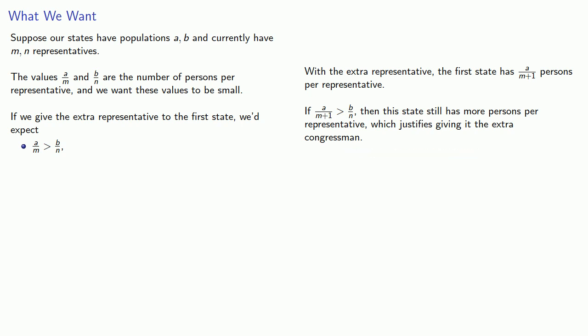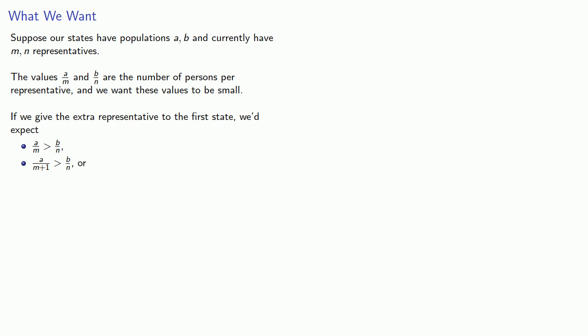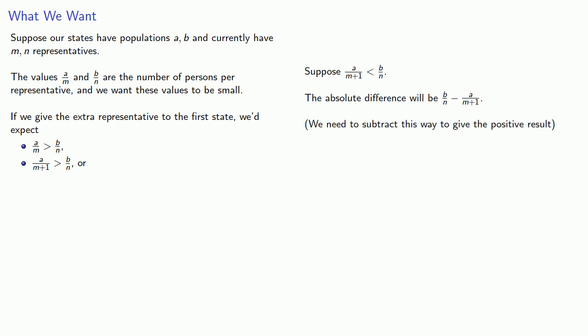So we'd expect that A/(M+1) should be greater than B/N. The problematic case will occur if we end up with a smaller value — the state would then have fewer persons per representative. Since we did give them the extra representative, what that means is that our absolute differences must have dropped. Our absolute difference will be B/N minus A/(M+1). This is supposed to be a positive number, and we need to subtract them this way to get a positive result.